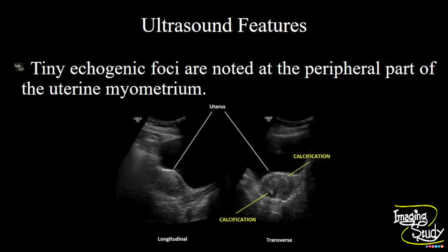In summary, tiny echogenic foci are noted at the peripheral part of the uterine myometrium, indicating degenerative arcuate arterial calcifications.